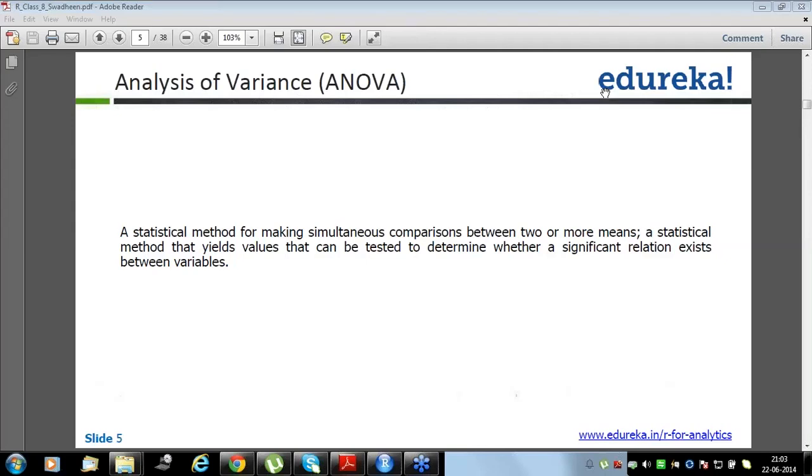Analysis of variance, ANOVA. So ANOVA as I told you, it is used to compare the mean between two or more. But T or Z can only be used to compare mean between two. So analysis of variance is a generalized class of that.